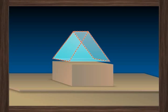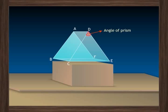You can see that the rectangular sides A, B, C, D and A, D, E, F are inclined at an angle. This angle is called the angle of a prism.